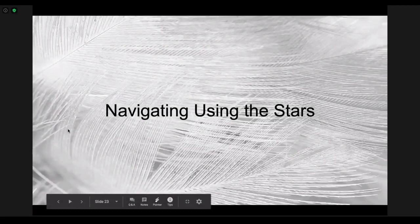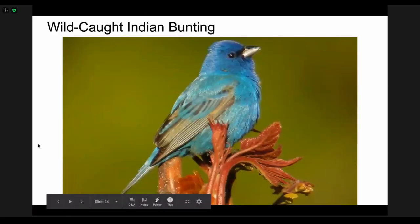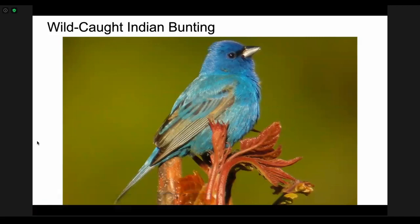So some animals navigate not by detecting the magnetic field of earth but by using patterns in the stars. First we're going to look at this wild caught Indian bunting. These are birds that are found in Canada mostly and they have a lengthy migration to the south every winter to avoid the cold winters in Canada. They were trying to figure out how these birds know which way south is, and so they put some of these birds actually inside of a planetarium and then turned on the constellations. And they found that no matter how the constellations were oriented in the planetarium, they always headed towards the constellations that would be in the south during their migration. So yeah, they're using those star patterns of the constellations in the southern sky to help them find their way to the south.